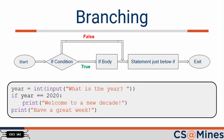With branching, we use an if statement to branch the flow of our program, as shown in the figure on the slide. What code executes depends on whether the result of the condition is true or whether the result of the condition is false. In other words, if the if condition results to true, we execute the if body code. Otherwise, we skip the if body code and flow to the statement just below the if statement.